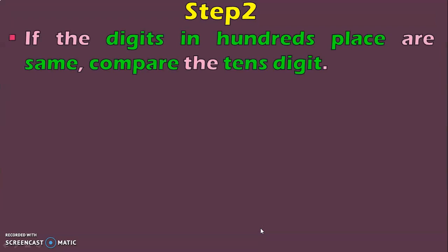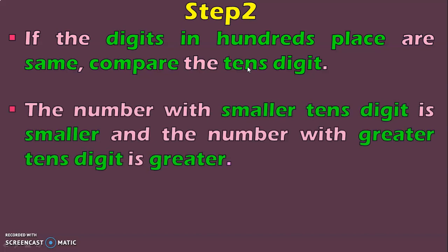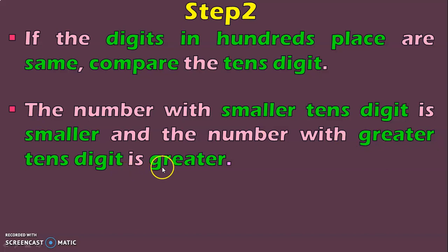Suppose the digits in the hundreds place are the same. In that case, you will have to move on to the next lower place value, which is the tens digit. The number with the smaller tens digit is smaller, and the number with the greater tens digit is greater.